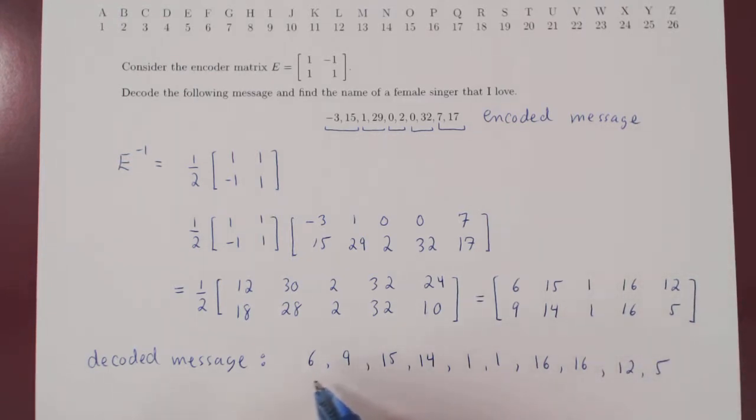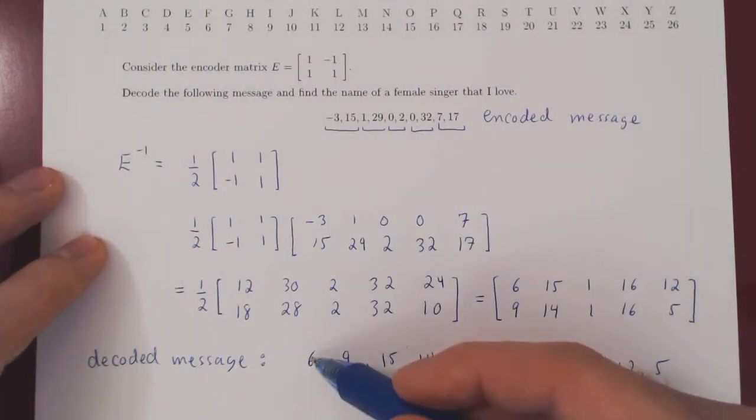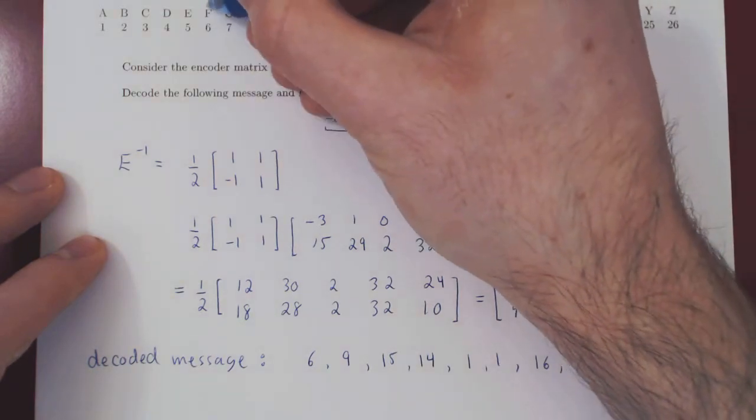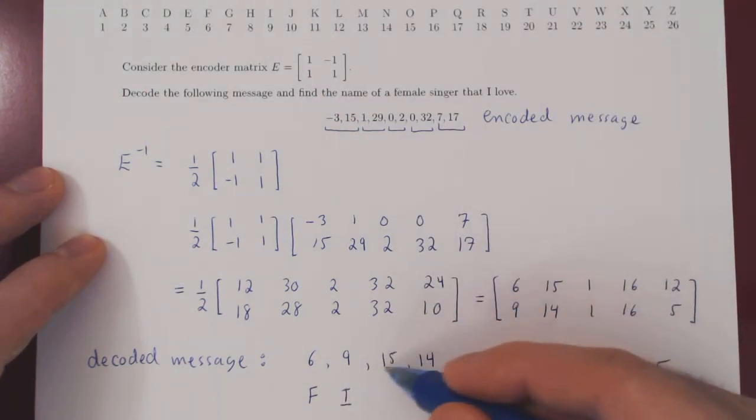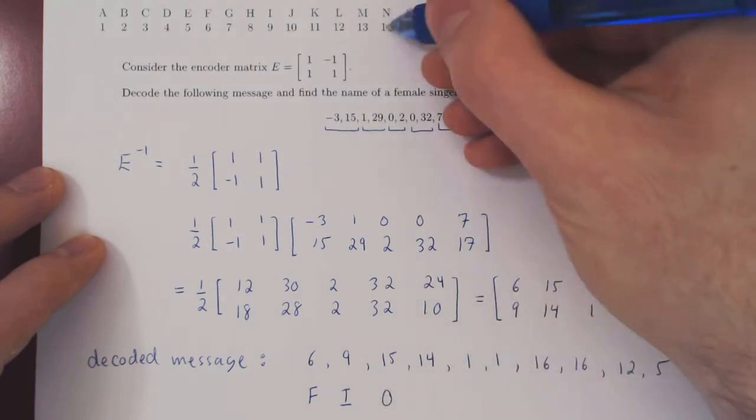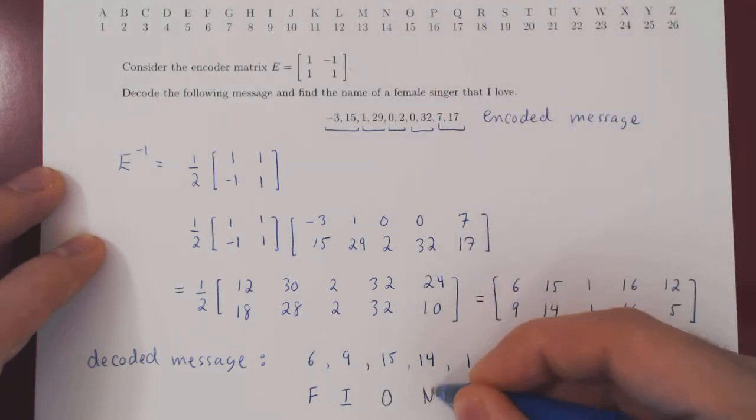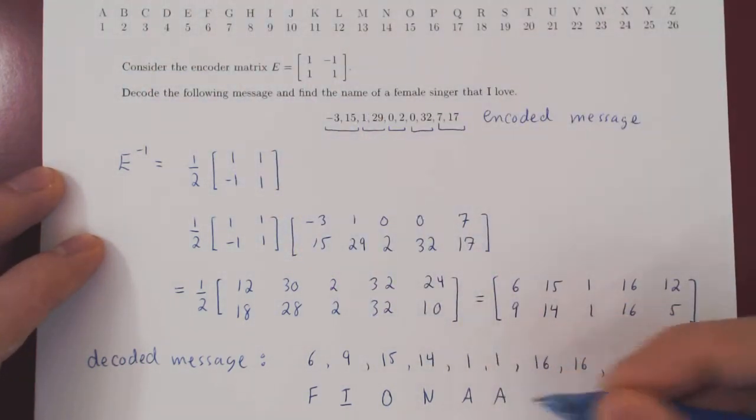And now we have the decoded message. All that remains is to translate back from the numerical message into the letter message. So let's translate. Number 6, letter F. Number 9, letter I. Number 15, letter O. Number 14, letter N. Number 1, number 1, obviously A. Number 1, A again.